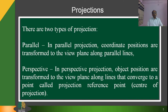In general, there are two types of projections: parallel and perspective. In parallel projection, coordinate positions are transformed to the view plane along parallel lines. Whereas in perspective projection, any set of parallel lines are transformed to the view plane along lines that converge to a point called the projection reference point, or in other words, the center of projection.